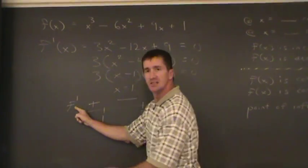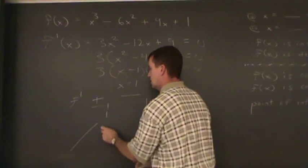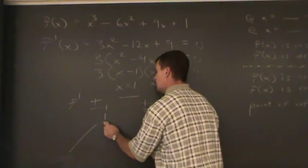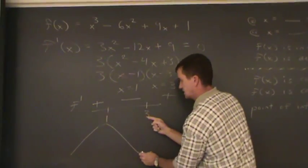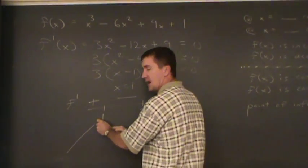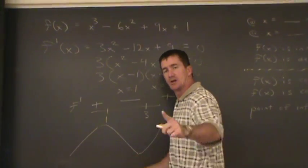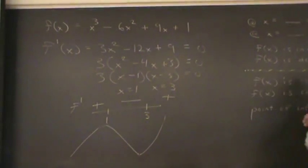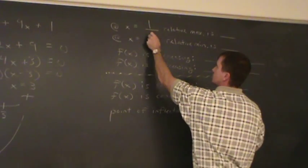So what's going on here is the function is increasing, positive slope, slope is zero, function's decreasing, then slope is zero at x equal to 3, and then the function is increasing. So obviously we have a relative max at x equal to 1, and a relative min at x equal to 3. And I'm gonna go fill that in in this chart right here. I'm gonna put relative max at x equal to 1, relative min at x equal to 3.